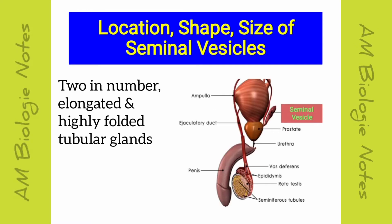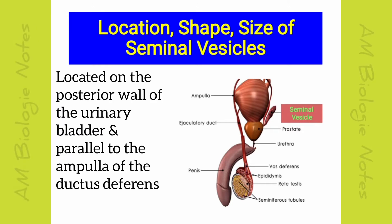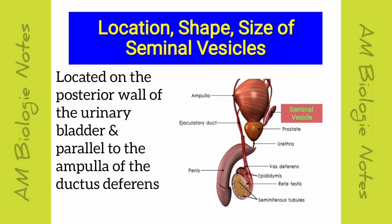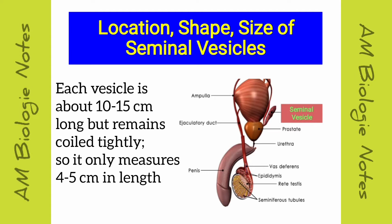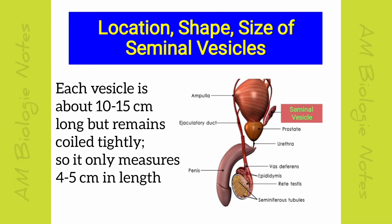Seminal vesicles or glands are two in number. They are elongated and highly folded tubular glands located on the posterior wall of the urinary bladder, parallel to the ampulla of the ductus deferens. Each vesicle is about 10 to 15 cm long but remains tightly coiled, so it only measures 4 to 5 cm in length.